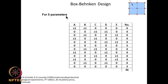For 5 factors a, b, c, d, e, we can develop the design in the same way. The shorthand notation is given, and you end up with 46 experiments. For example, a and b ± with c, d, e maintained at 0 — like that you keep varying, and you also have center points. Totally 6 experiments for center points, so this comes to 46 experiments for a Box-Behnken design with 5 factors.